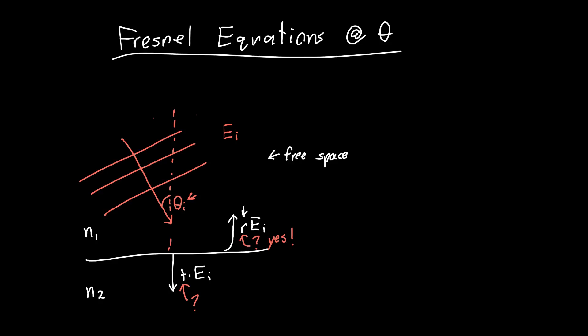The trickiest part of figuring this out is dealing with polarization, because there are many ways our electric and magnetic fields could be pointing to give us a particular direction of propagation or k-vector. Now we can have fields with components that aren't tangential to the surface. Let's assume for now that our electric field is pointing toward us, so the magnetic field — if we're going downward and to the right — has to point downward and to the left.